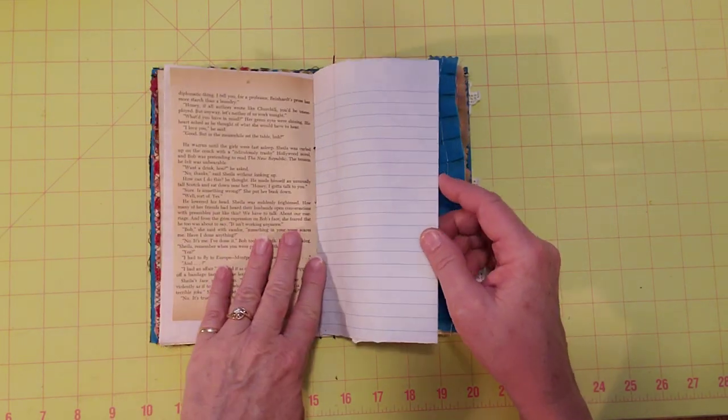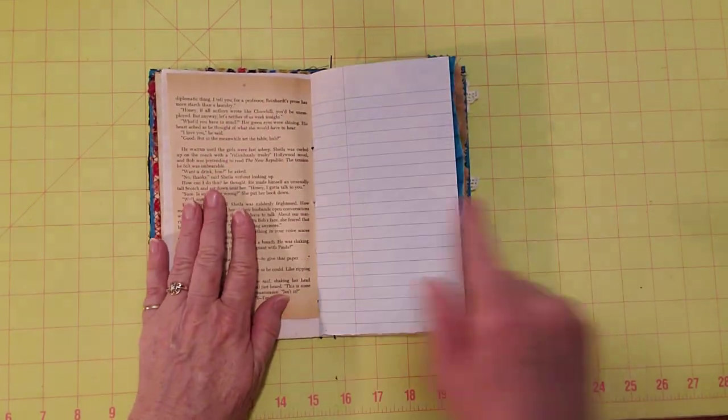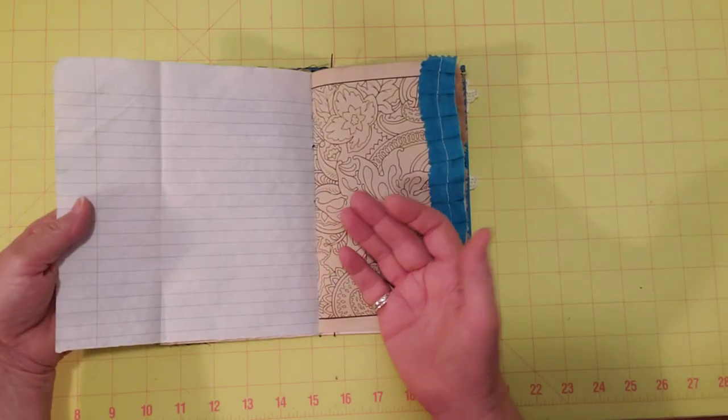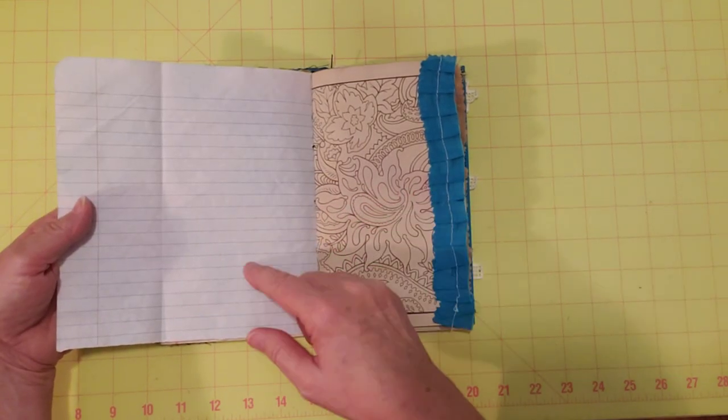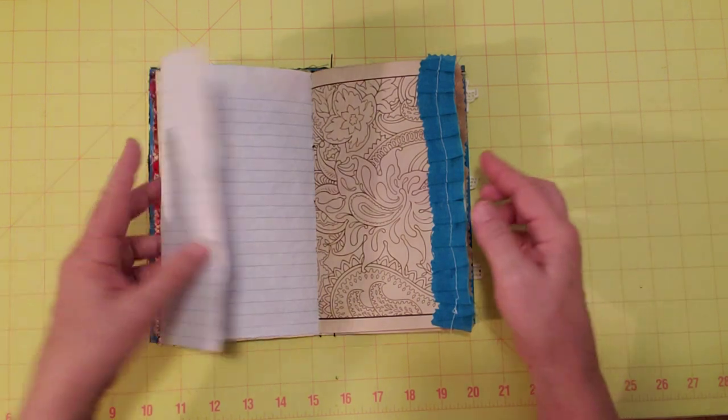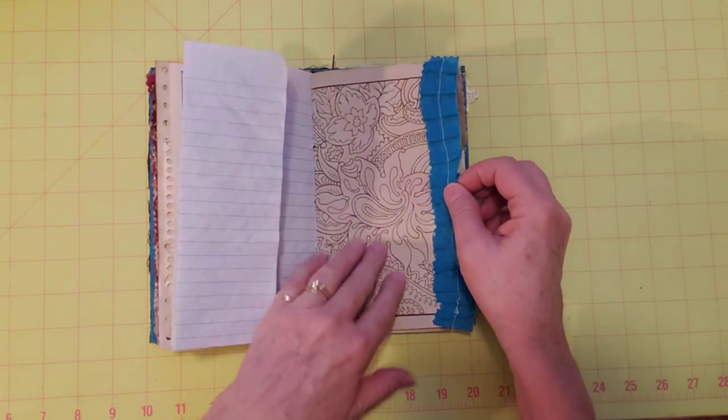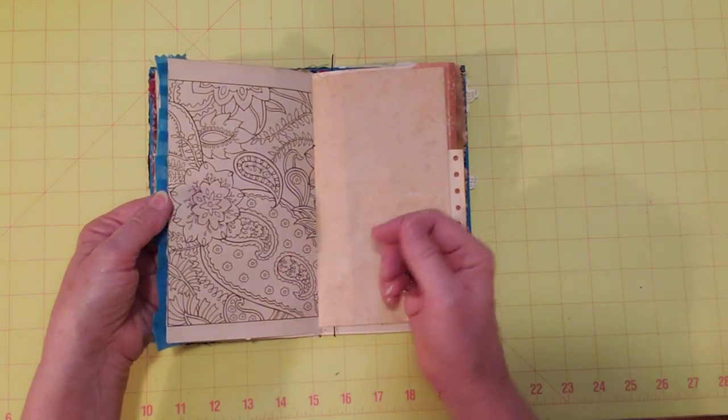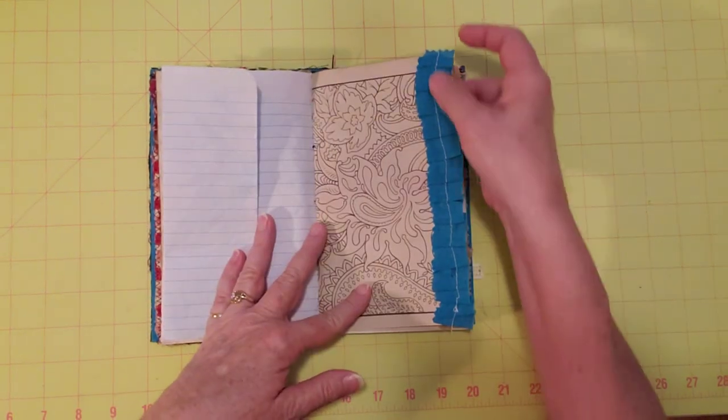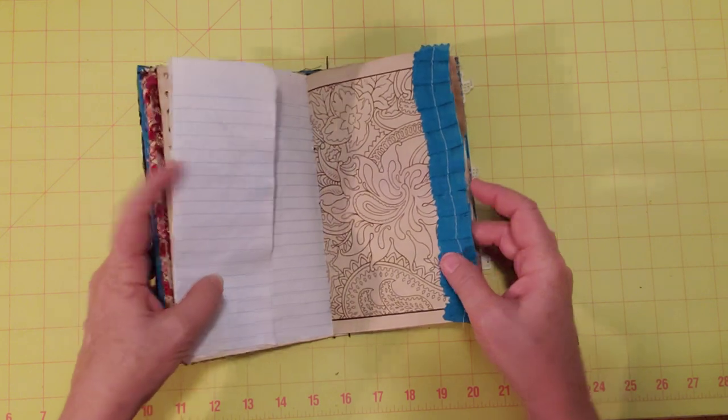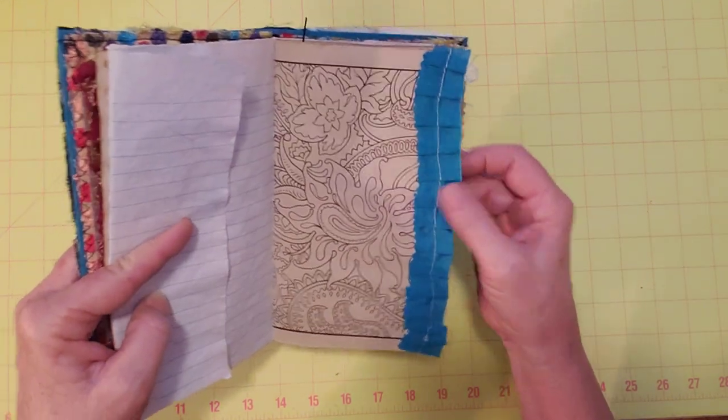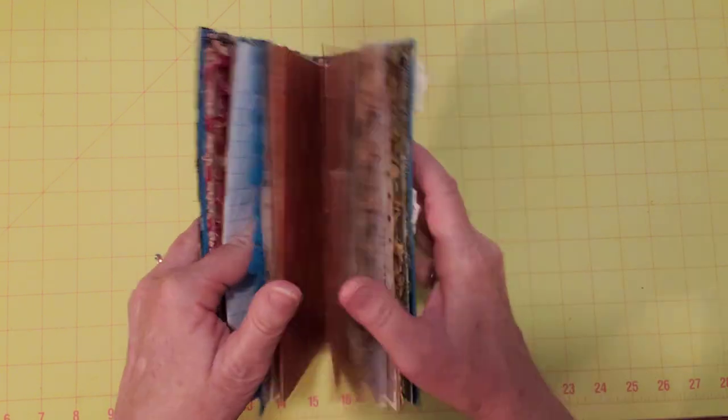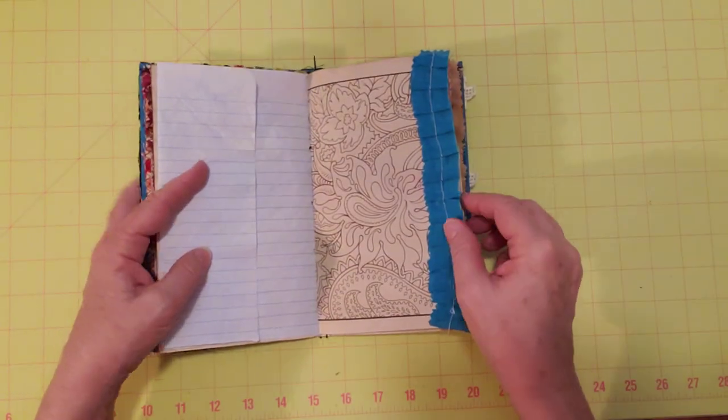This is avocado dyed paper here. This is a book page that I had sitting in my stash. I think there's a decoration on the other side. This is the composition book paper that I dyed with blue food coloring. And this is a coffee dyed coloring book page. And that was double-sided coloring book page. And then I did add a ruffle here. This is the fabric that I used underneath here, that blue. So I made a ruffle with some of that and put that there.